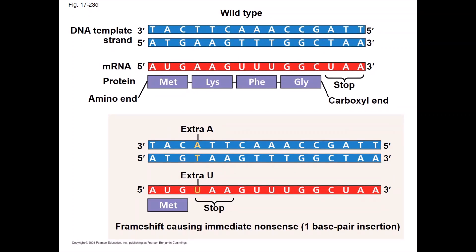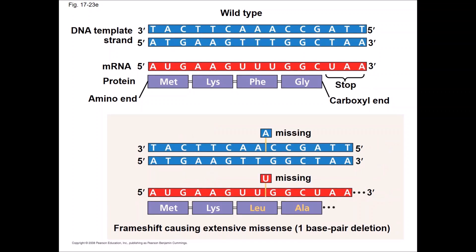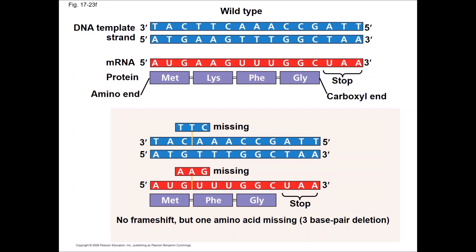Frameshift mutations result from insertions or deletions of nucleotides in non-multiples of three. These shift the reading frame of the triplet codons, resulting in missense or nonsense codons after the mutation. In this example, a frameshift causes an immediate nonsense mutation, and here is a frameshift causing missense mutations in every codon after the mutation. Deletions or insertions in multiples of three will remove or add one or more amino acids to the polypeptide.